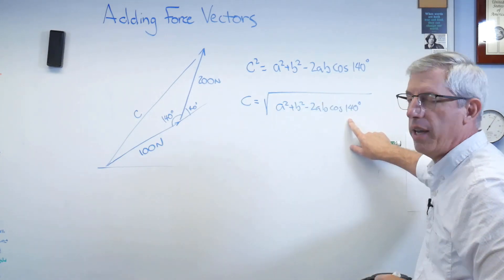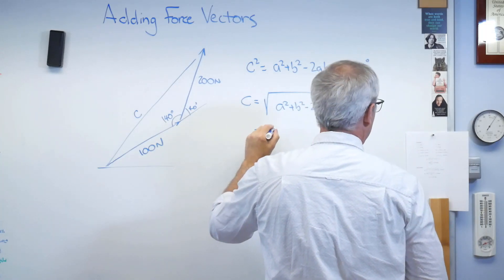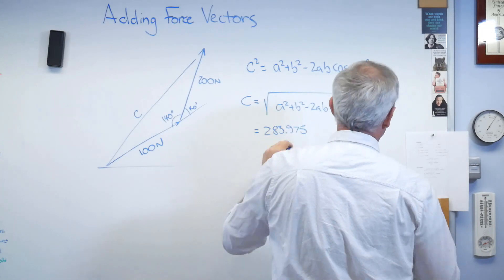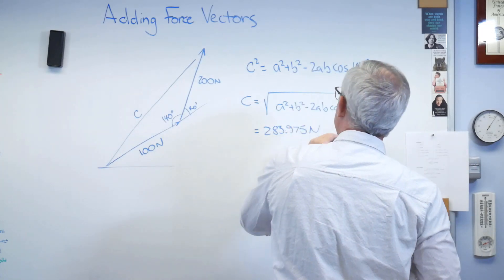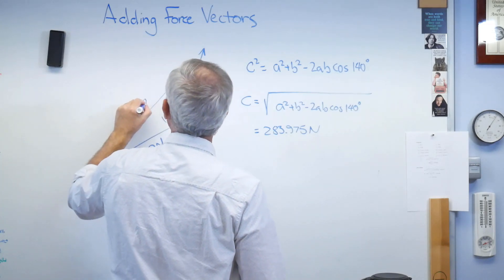So it's A squared plus B squared minus 2AB cosine 140 degrees. When you work that out, guess what you get? You get 283.975. And I did it in both ways on my little cheat sheet here, just to make sure it was right. So, I got the same answer.